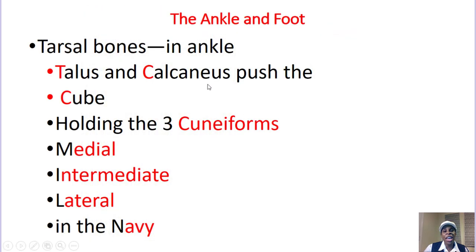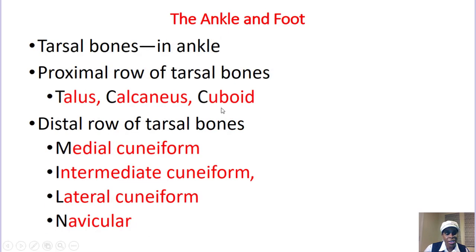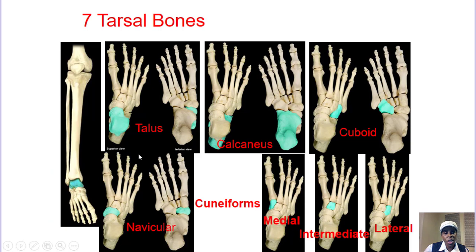Let's look at the ankle and foot. The tarsal bones: talus and calcaneus, cuboid, then the cuneiforms — medial, intermediate, and lateral — and navicular. The talus is the first bone that articulates with the tibia. The calcaneus is at the bottom — when you walk, you walk on your calcaneus. The navicular holds the three cuneiforms in place.